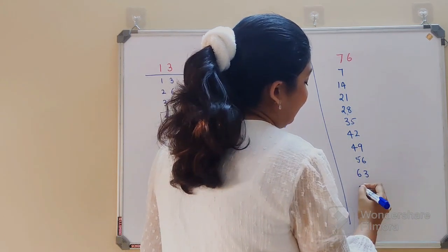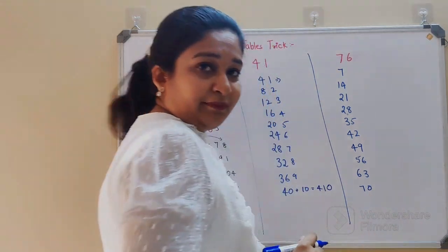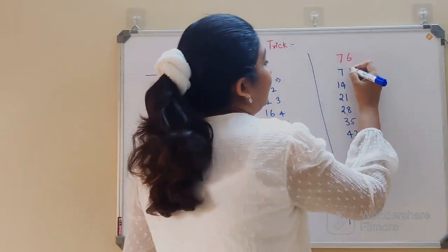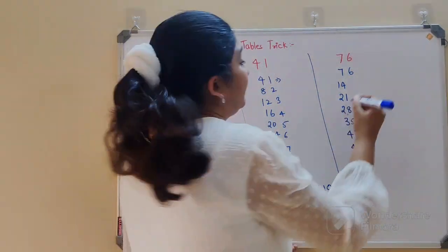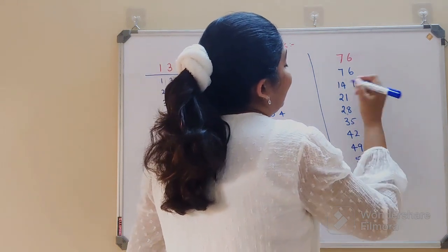7 sixes are 42, 7 sevens are 49, 7 eights are 56, 7 nines are 63, and 7 tens are 70.